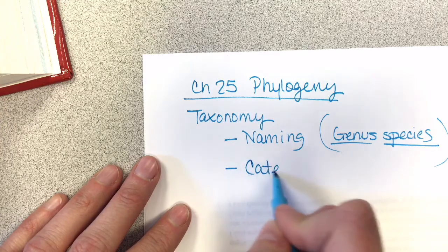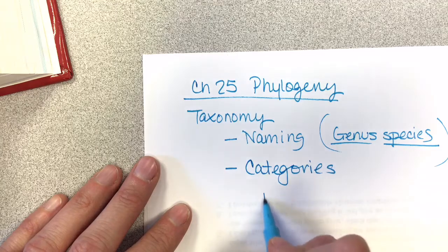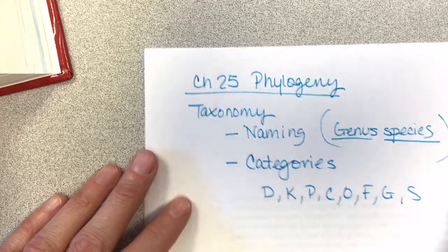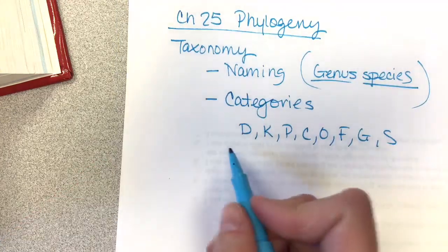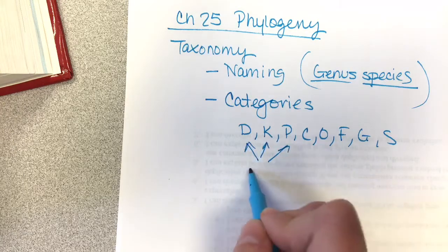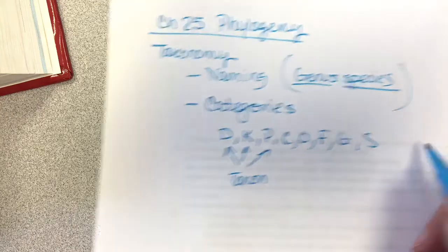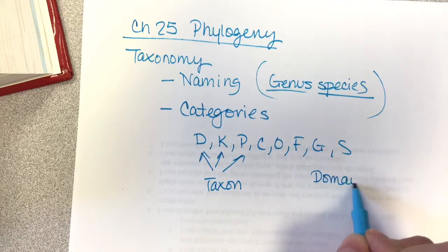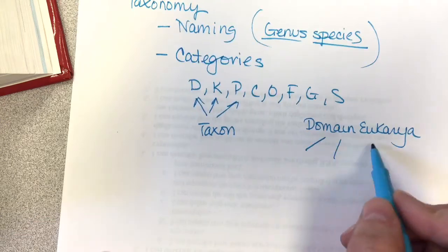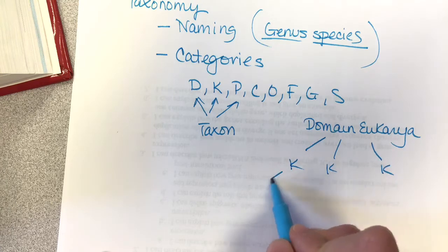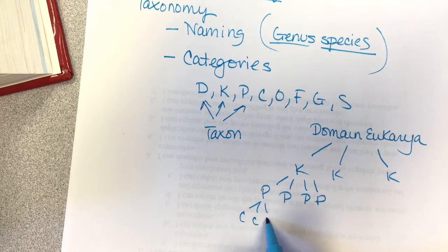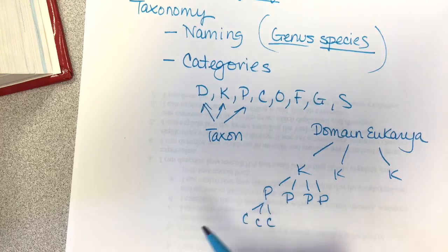You should know the order of the taxonomic categories: domain, kingdom, phylum, class, order, family, genus, species. Each one of these groups is called a taxon. The domain Eukarya is one of the domains, and it's subdivided into different kingdoms, each kingdom into different phylums, each phylum into different classes, and so on until you get to individual species.